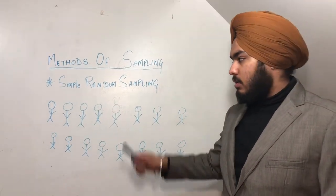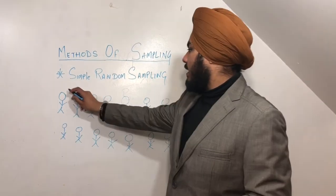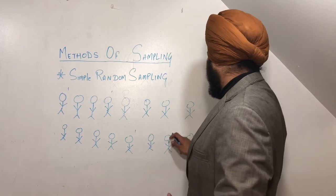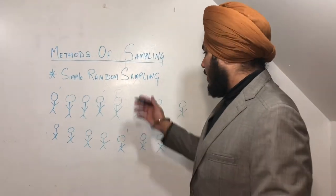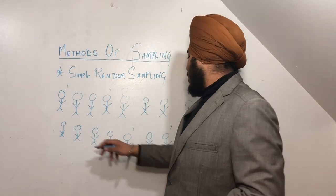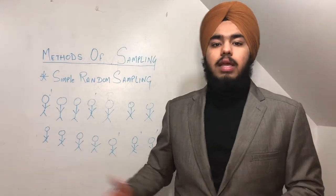It can be this, it can be this, it can be this - because it's simple random sampling, we can choose any one of them.